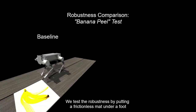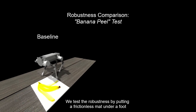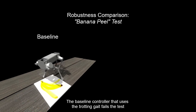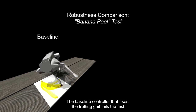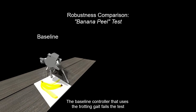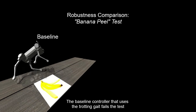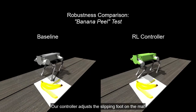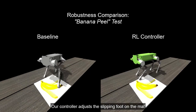We test the robustness by putting a frictionless mat under a foot. The baseline controller that uses the trotting gait fails the test. Our controller adjusts the slipping foot on the mat.